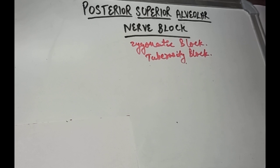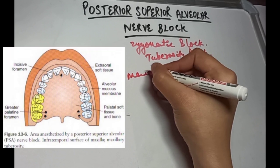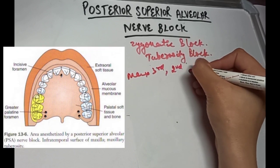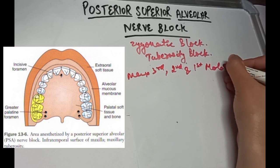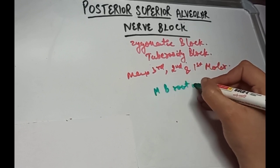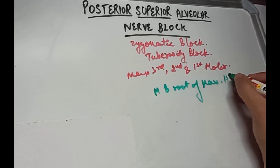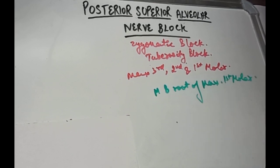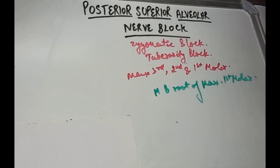The posterior superior alveolar nerve block is effective for anesthesia of maxillary third, second, and first molars. However, there is an exception: the mesiobuccal root of the maxillary first molar. In certain cases, the mesiobuccal root of the maxillary first molar is not consistently innervated by this posterior superior alveolar nerve, and therefore a second injection — mostly supraperiosteal or infiltration — is indicated, because in these cases the middle superior alveolar nerve innervates the mesiobuccal root of the maxillary first molar.